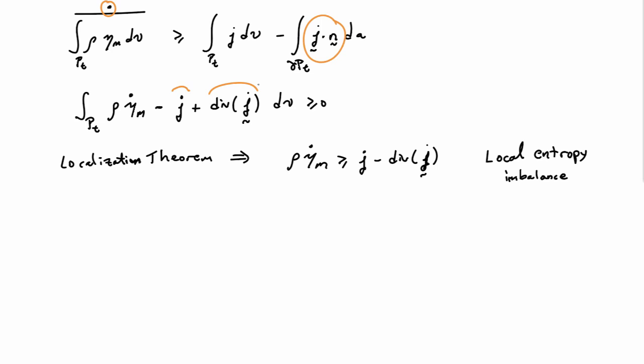Now, this is not the way that we will finally write it. We'll make use of one fundamental hypothesis in continuum mechanics, which is that the volumetric entropy supply is actually equal to the volumetric heating divided by the absolute temperature. So the θ there is the absolute temperature, and the entropy flux, the vector j, is equal to the heat flux vector q also divided by the absolute temperature.